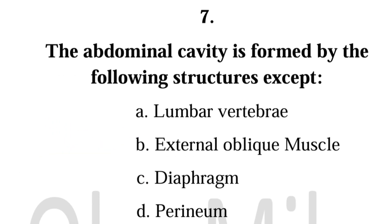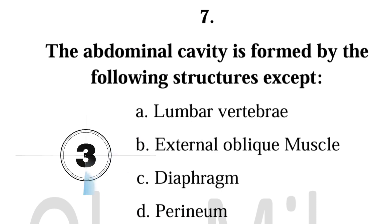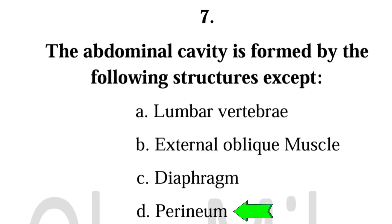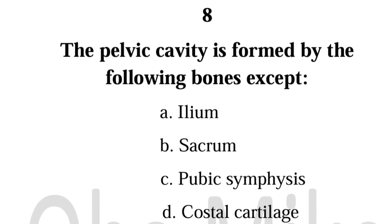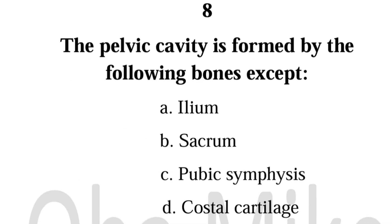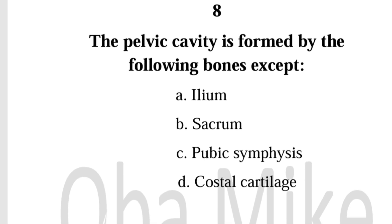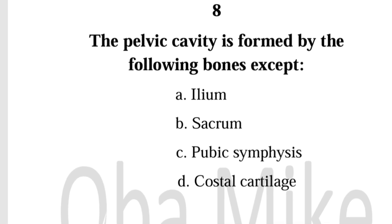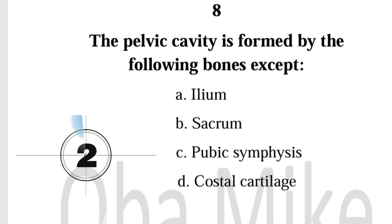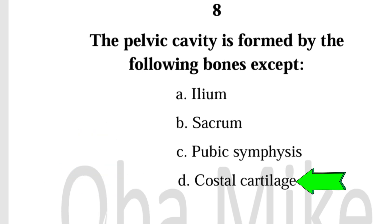Number 7. The abdominal cavity is formed by the following structures except: Perineum. Number 8. The pelvic cavity is formed by the following bones except: Costal cartilage.